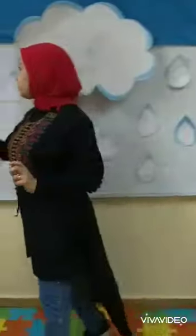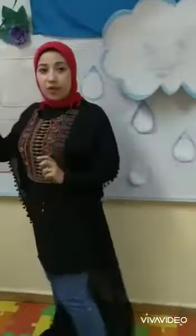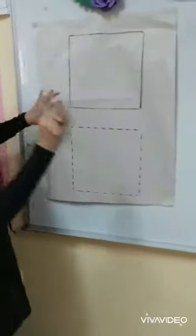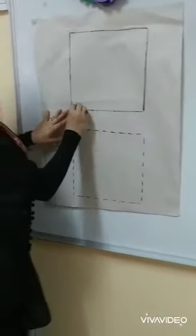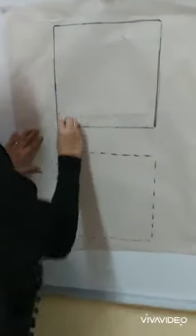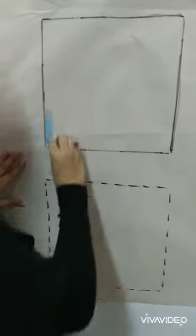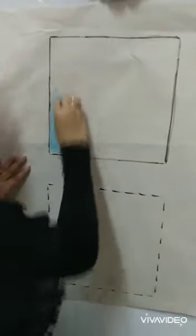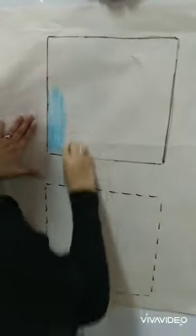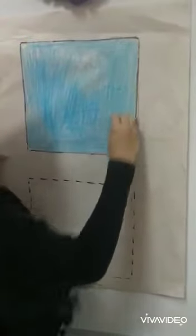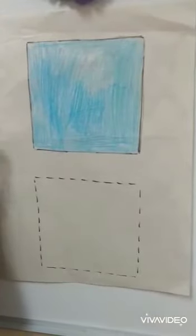Let's learn how to color the square and trace it. We will use our blue crayon and start from here. Color, up and down, like this. I will use our blue crayon and start from here. Color, up and down, like this. Now I have finished.